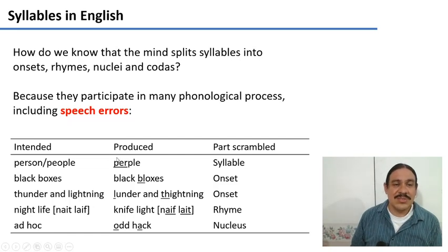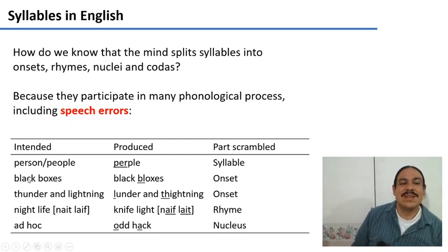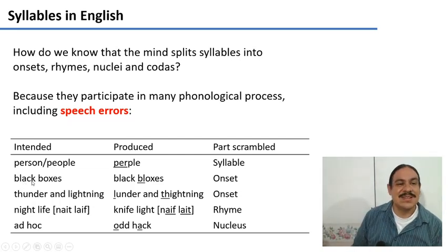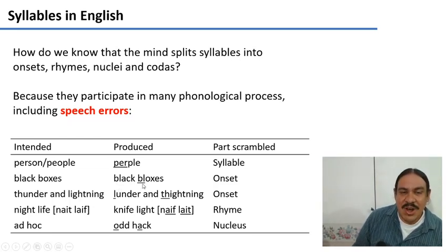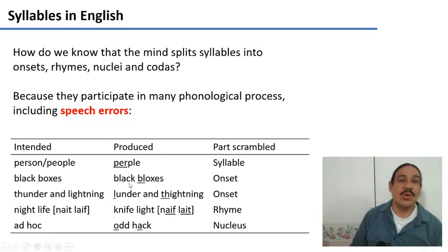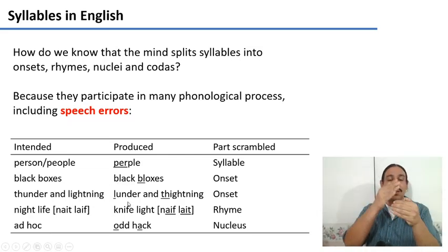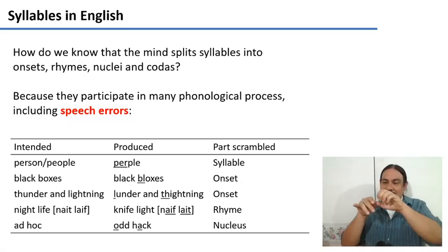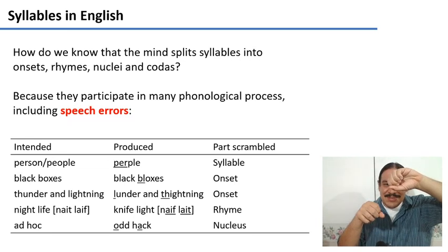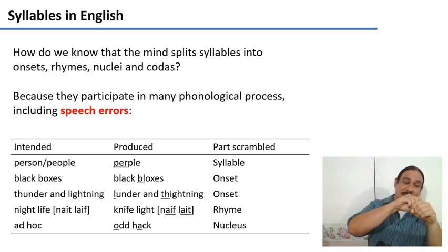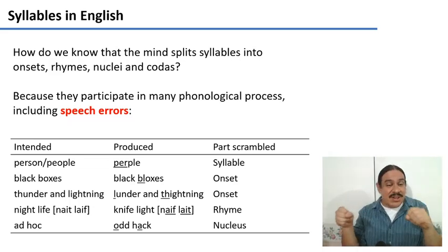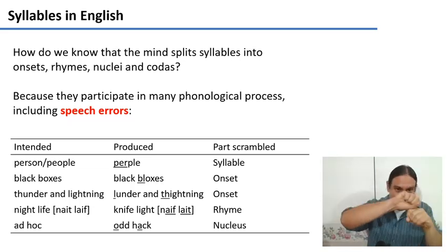So we have speech errors where we scramble syllables, but we also have speech errors where what we scramble are onsets. For example, there's people who have observed others tried to say black boxes and instead say black bloxes, where what you scramble is the onset of the first syllable. So we know that in their minds they must have been splitting the onset from the rhyme so that the onset survived the collision of the two words. So the onset of one word was copied into the other one. But this means that the onset existed as its own unit which could be copied.